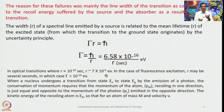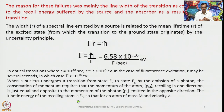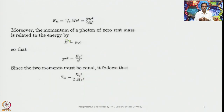When a nucleus undergoes a transition from the excited state to the ground state by emission of a photon, conservation of momentum requires that the recoil momentum of the atom P_m is equal and opposite to the momentum of the photon P_γ emitted in the opposite direction. The kinetic energy of the recoiling atom is E_r, so for an atom of mass m and velocity v: E_r = ½mv² = P_m²/2m. The momentum of a photon of zero rest mass is related to energy by E = P_γc, so P_γ² = E²/c², and since the two momenta are equal, E_r = E_γ²/2mc².